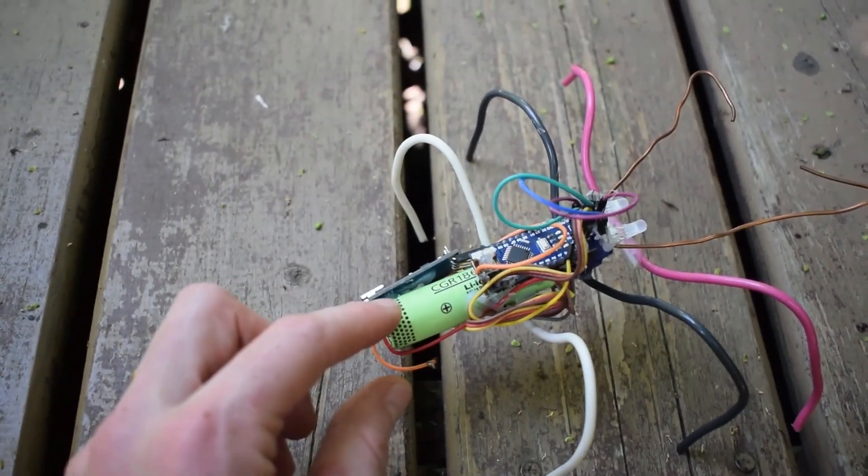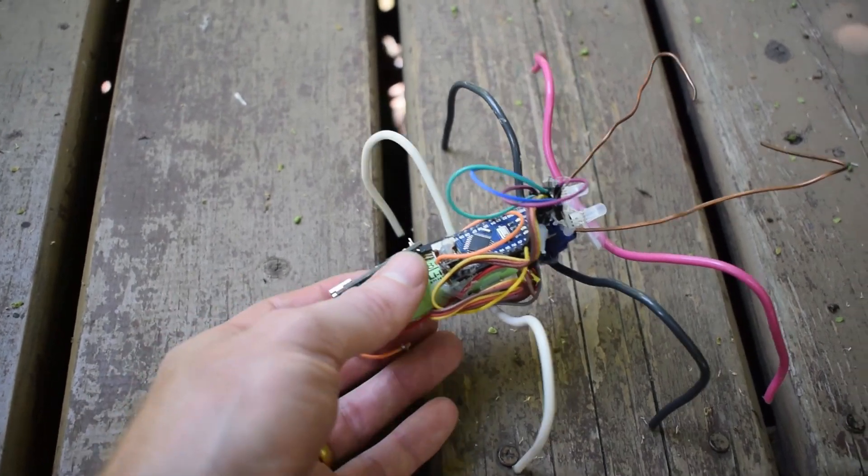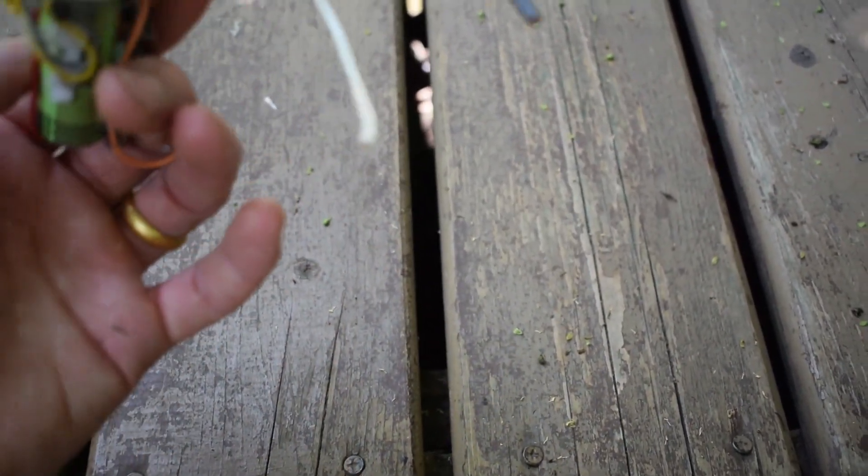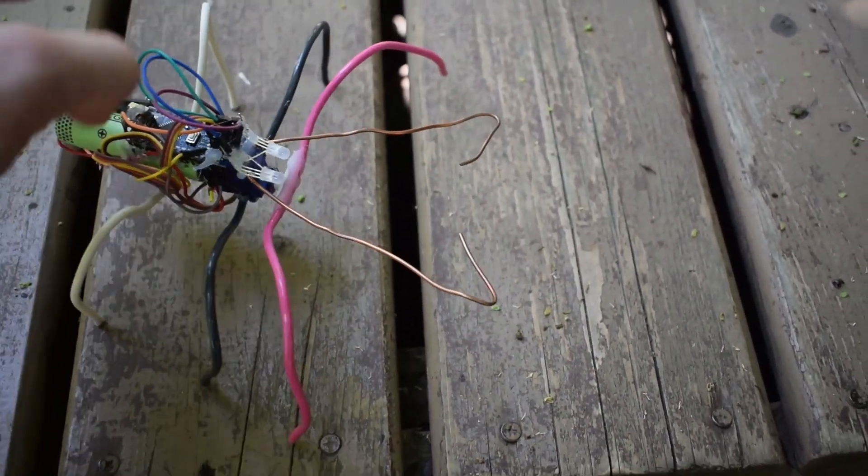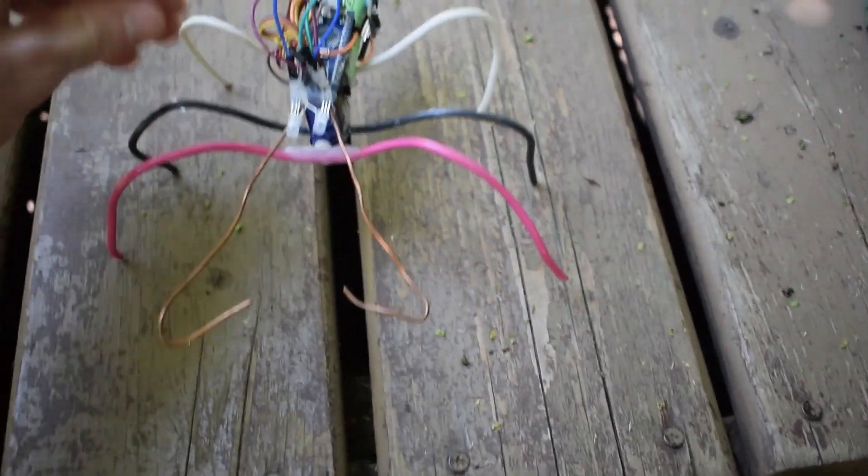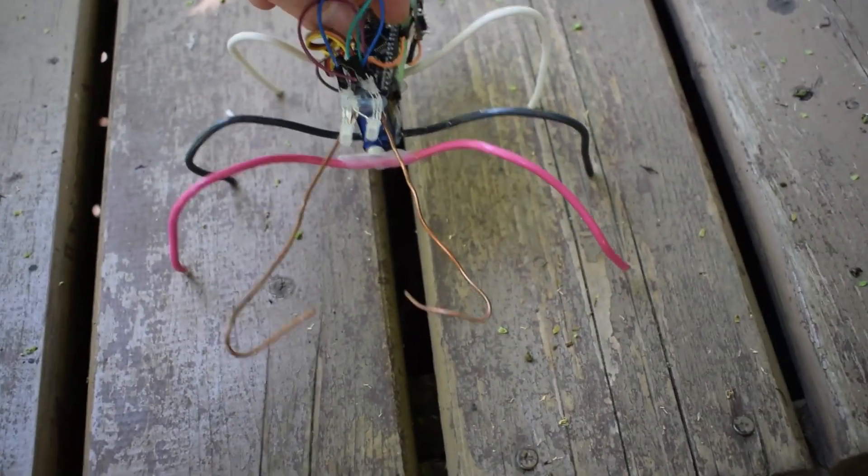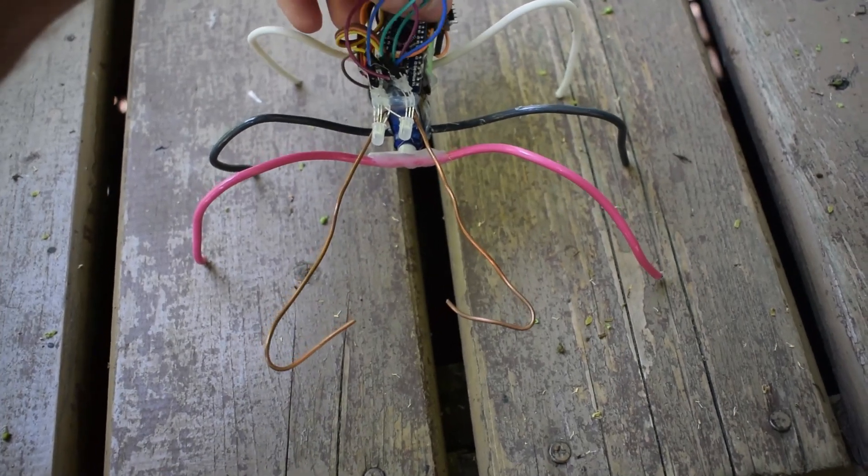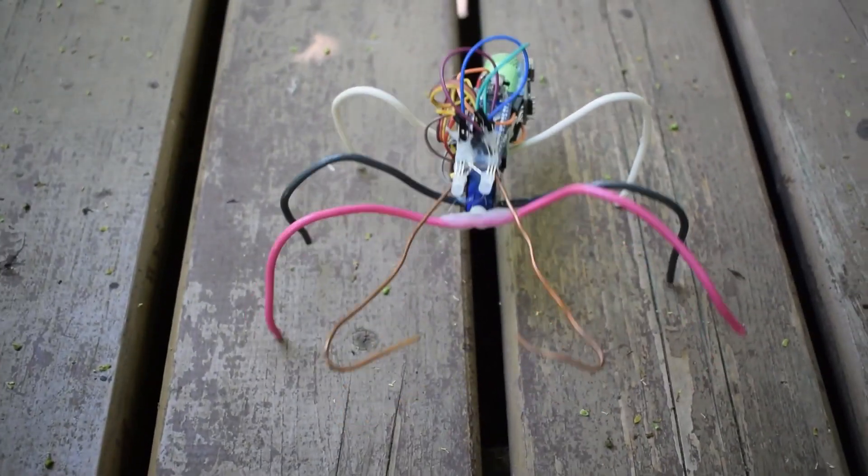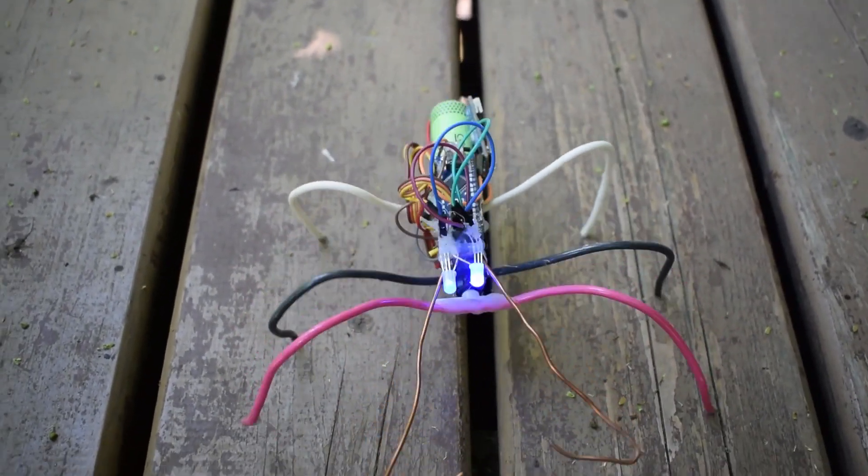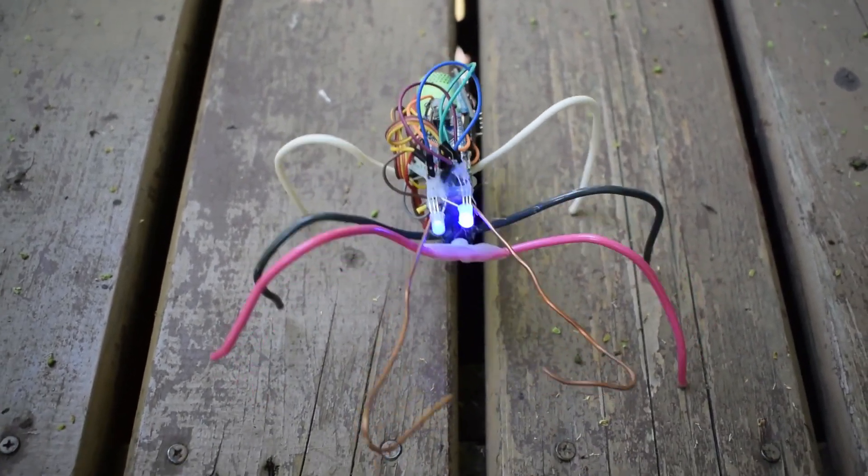It has one battery from an old laptop, so it's running on 3.4 volts and a little electronic switch. It's basically a single servo robot, and it uses its weight to go forward.